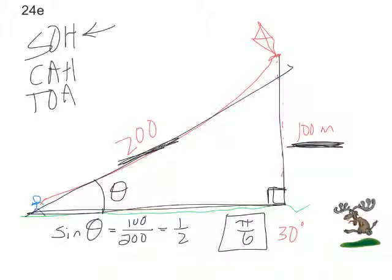Fortunately for us, they told us that we can assume that the string is perfectly straight. If the string actually did curve, like kite strings tend to, this would be a much, much more difficult problem to do.